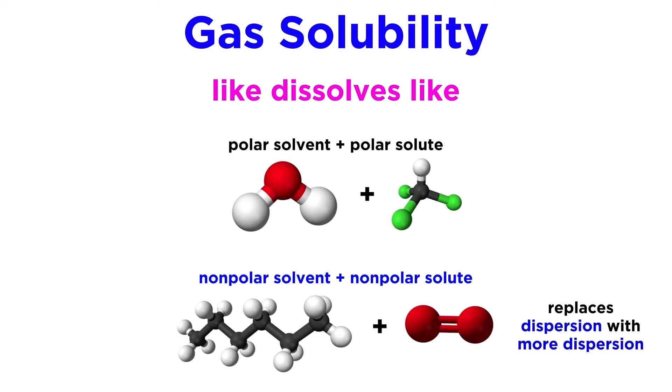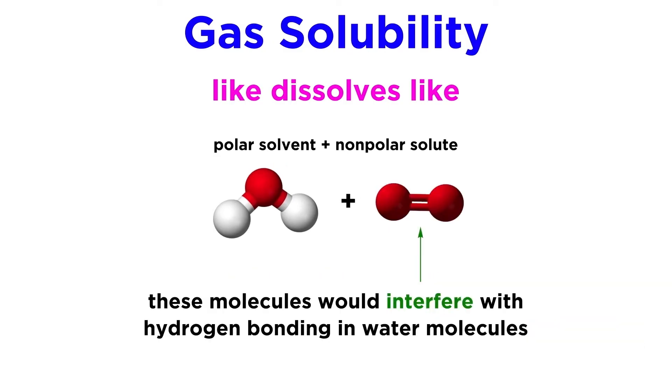This means that when oxygen dissolves in hexane, it will simply replace some of these dispersion interactions with other dispersion interactions, which is a relatively small discrepancy in energy, rather than if it is dissolved in water, where it has to disrupt the hydrogen bonds in pure water without being able to provide an equally strong interaction to replace them.